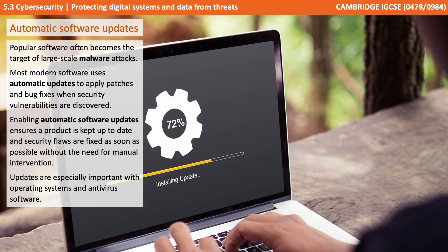Next, we're going to discuss automatic software updates. Popular software often becomes the target of large-scale malware attacks. Most modern software uses automatic updates to apply patches and bug fixes when security vulnerabilities are discovered. Enabling automatic software updates ensures the product is kept up to date and security flaws are fixed as soon as possible without the need for manual intervention. Updates are especially important with operating systems and antivirus software.